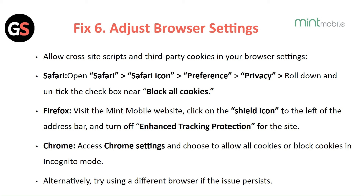For Firefox, visit the Mint Mobile website, click on the shield icon to the left of the address bar, and turn off Enhanced Tracking Protection for the site. For Chrome, access Chrome Settings and choose to allow all cookies and block cookies in Incognito mode. Alternatively, try using a different browser if the issue persists.